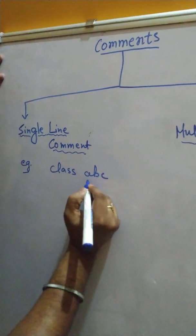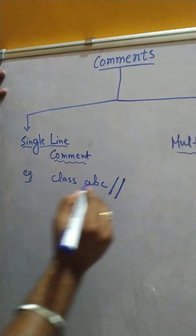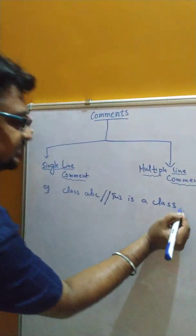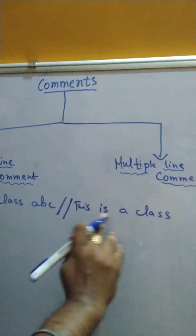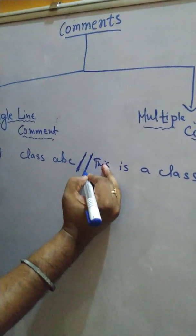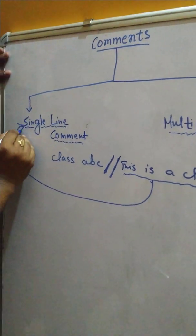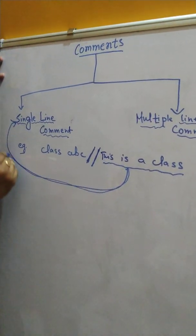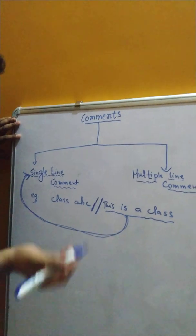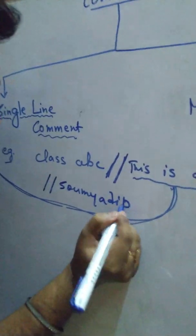For example, we are writing the first line of the program as 'class ABC'. Now if I want to write a comment here, I give a double forward slash and then write 'this is a class'. This is not case sensitive, so spelling mistakes don't matter. The double slash indicates that this is a single line comment.